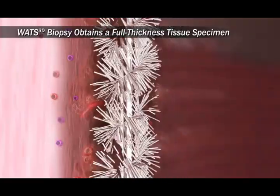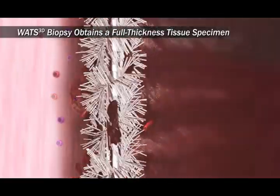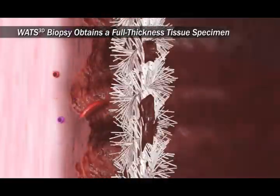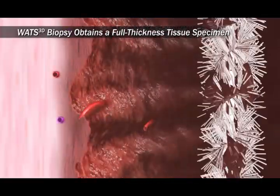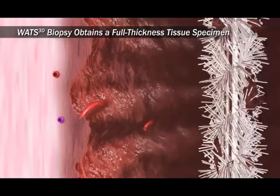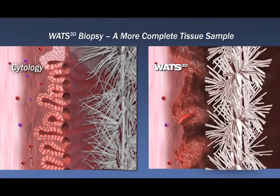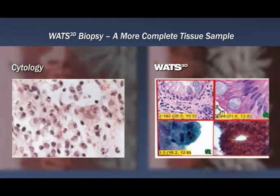The Watts 3D biopsy works by shearing the epithelium down to its deepest location — the lamina propria — where the abnormal cells may be lurking. It collects both individual cells and microbiopsies, fragments of intact tissue, providing the pathologist greater evidence of abnormality than traditional cytology.